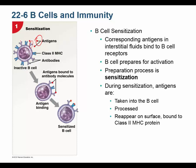These antibodies sticking off the B-cell happen to be a type called IgD. The five types of antibodies are IgG, IgA, IgM, IgE, and IgD. The sensitization of the B-cells occurs when foreign antigens bind those antibodies.